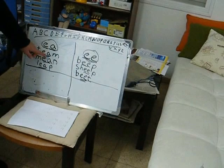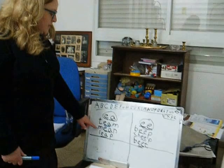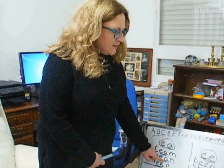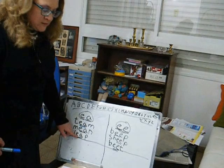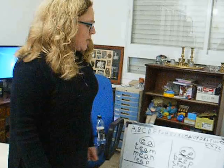Let's see if we can read some words with these vowel teams. Ellie, you want to come read the first word? Mean. Very good. Abby, come read the second word. Mean. Very good. And what's the vowel sound in mean? E-A. What sound does E-A make? E. Okay, next word. Ari, what does this word say? Leap. Very good. And what's the vowel team in leap? E-A. And what sound does E-A make? E. Very good. So everybody, what sound does E-A make? E.